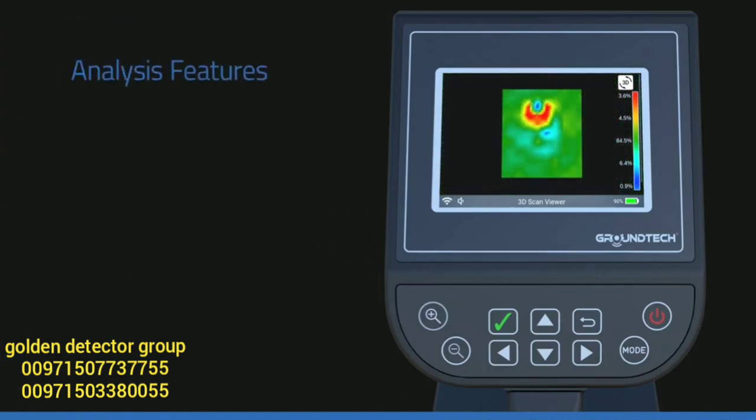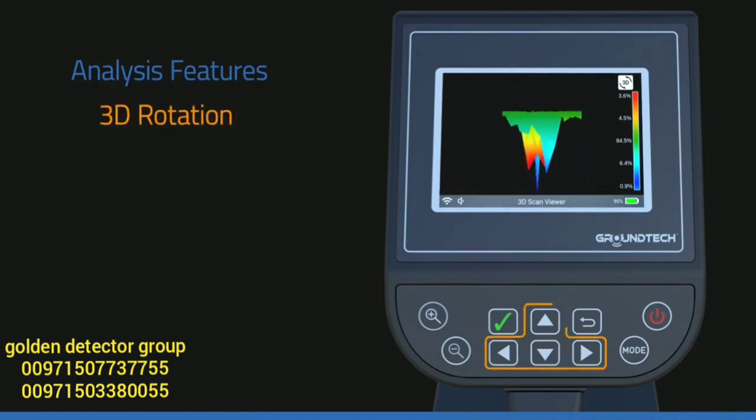There are four different graph analysis features on the 3D viewer function. 3D rotation: you can use the direction buttons on the device to rotate your graph left, right, and up, down. This way you can see your graphic from different angles.